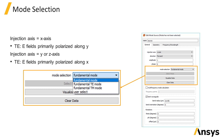In FDTD solutions, TE-like modes correspond to modes where the electric field is polarized primarily along the Y direction for sources injected along the X axis, and primarily along the X direction for sources injected in the Y or Z axis directions.